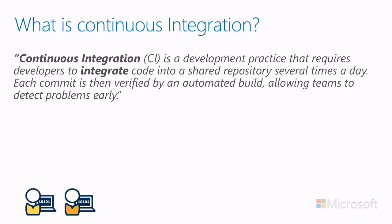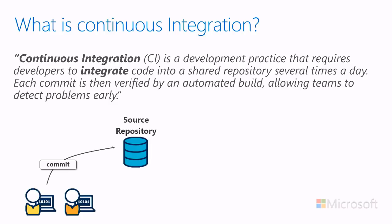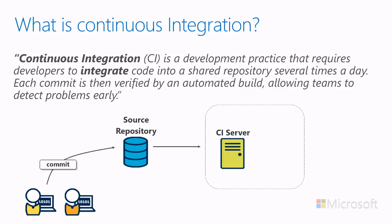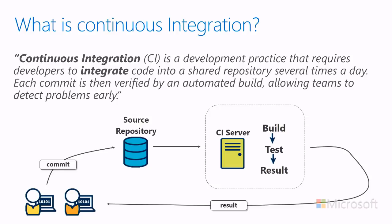In the CI workflow, developers commit code that gets pushed into a source repository, triggering an automated process on a server that is not a developer workstation. On the CI server, you have a build-test workflow — the bare minimum required. Of course, you can elaborate by running security scans, code review scans, and more. The results should be fed back to developers who review and improve them.